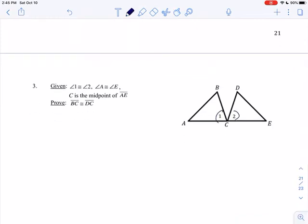And I just have one more on the back. And then we're going to practice, and then we'll do some review. So angle 1 is congruent to angle 2. I marked that. Angle A is congruent to angle E, and C is the midpoint of AE. Angle A is congruent to angle E, and C is the midpoint of AE.